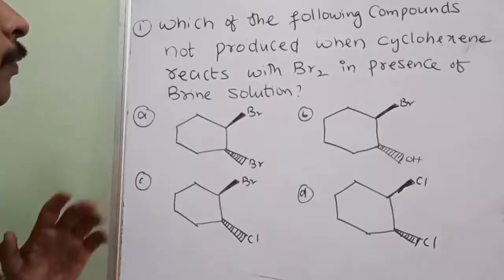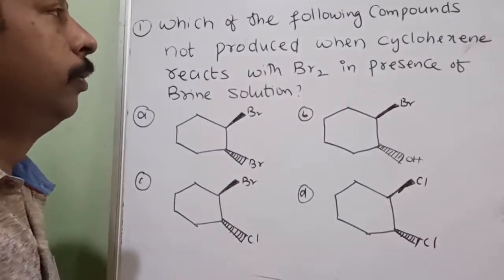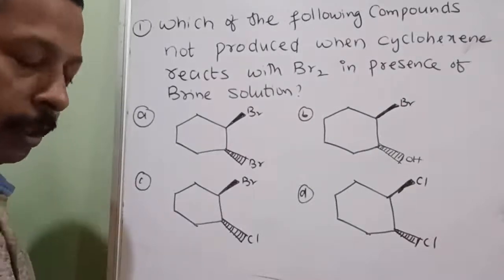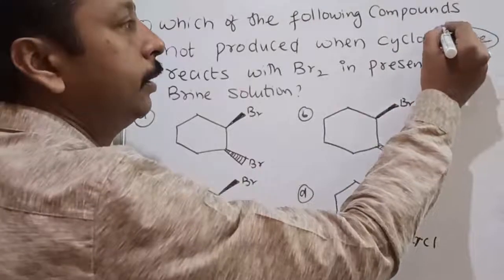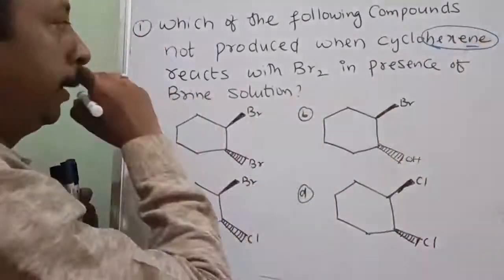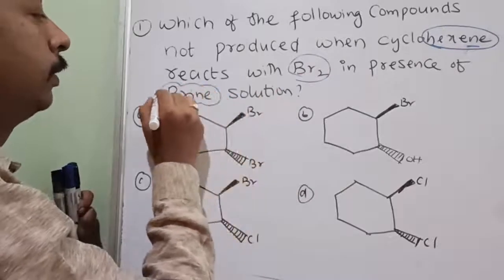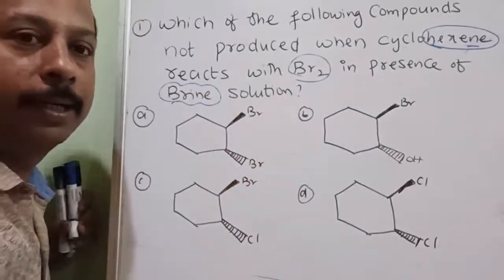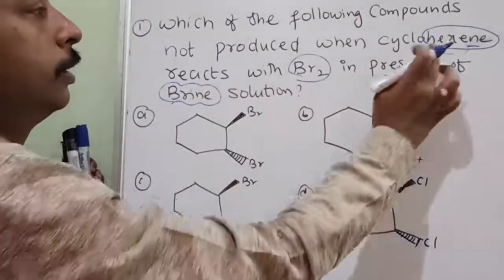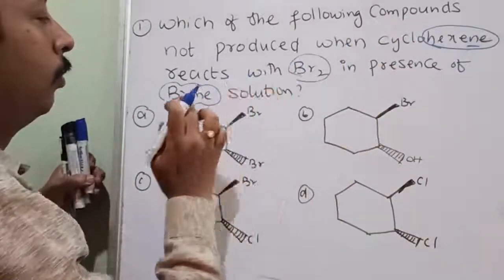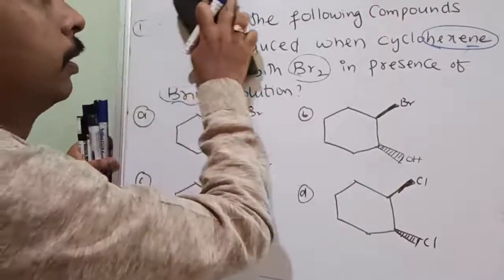The question is: which of the following compounds is NOT produced when cyclohexene reacts with bromine in the presence of brine? See — so many twists! So I am erasing this: cyclohexene reacts with bromine in the presence of brine, and these are the possible products.